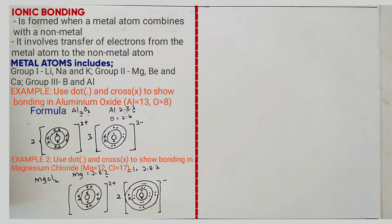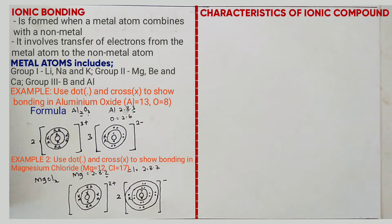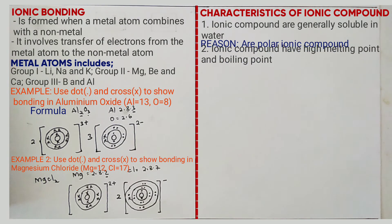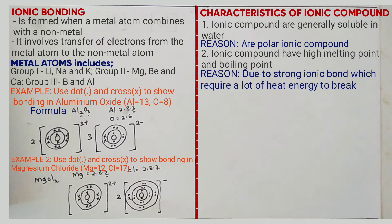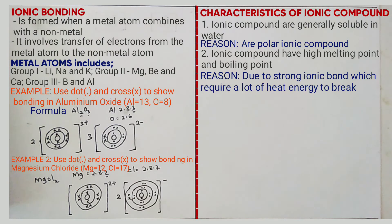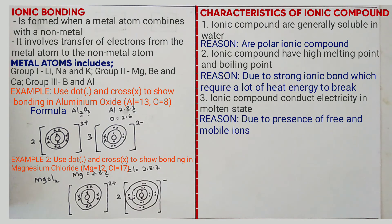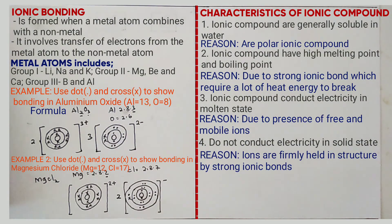Because metal combined with non-metal, it forms what we call ionic compounds. Characteristics of ionic compounds include: one, they are generally soluble in water — reason: they are polar ionic compounds. Two, they have high melting and boiling point — reason: due to strong ionic bonds which require a lot of heat energy to break. Three, they conduct electricity in molten state — reason: due to the presence of free and mobile ions. Four, in solid state they do not conduct electricity — reason: the ions are firmly held in structure by strong ionic bonds.